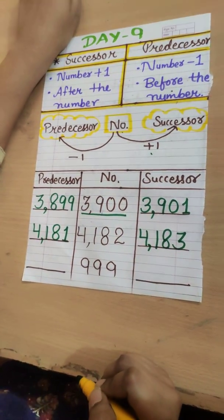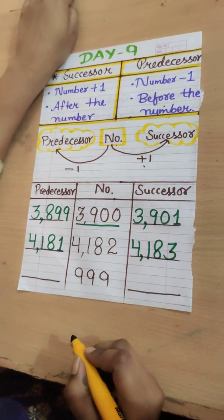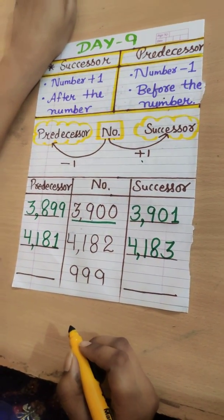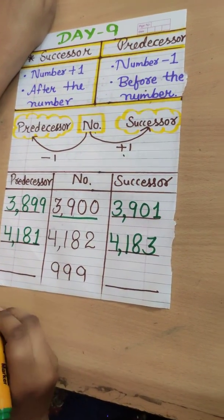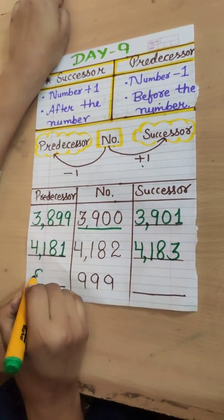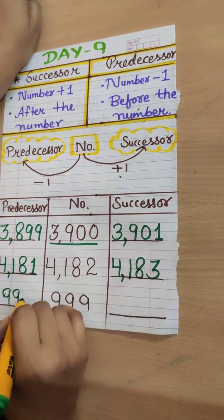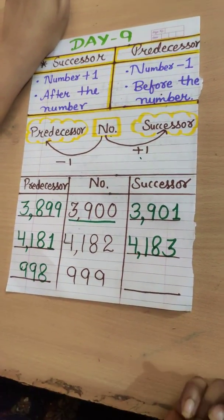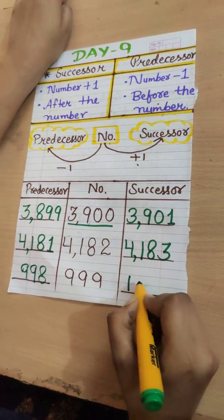Now it's your turn. The number is 999 — it's the greatest three-digit number. What will the number be if I subtract one? Yes, that will be the predecessor, and the answer is 998. Now the successor of 999 will be 1,000.